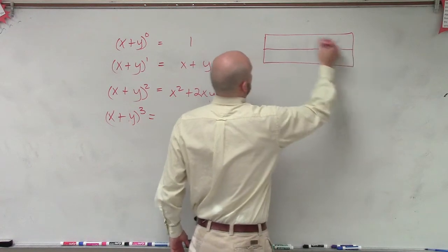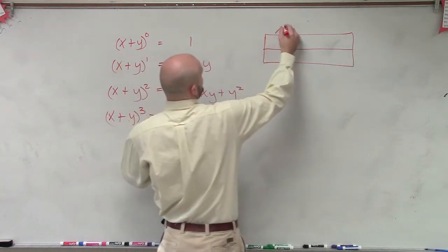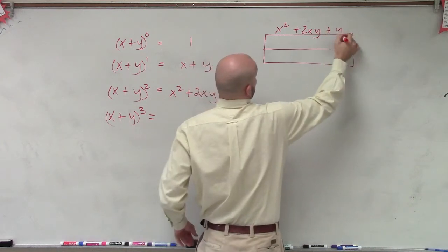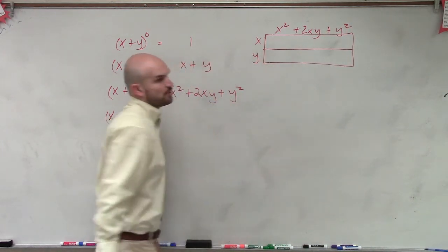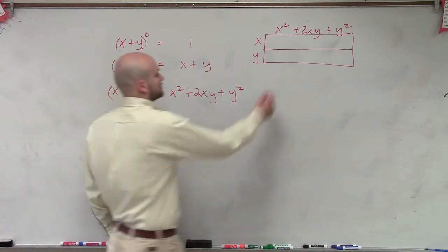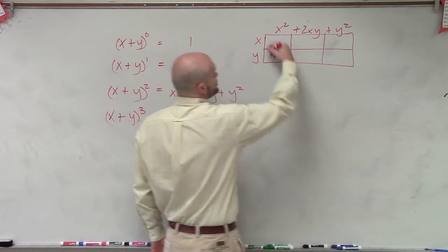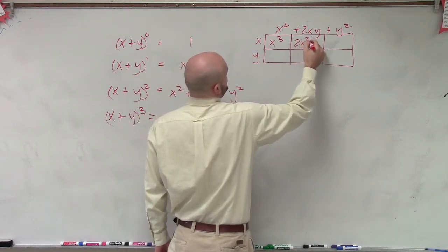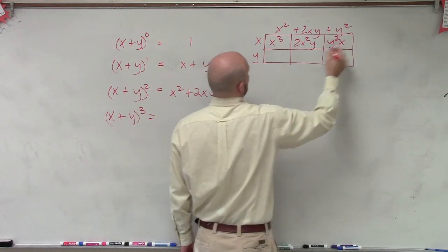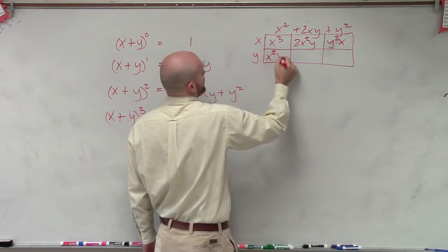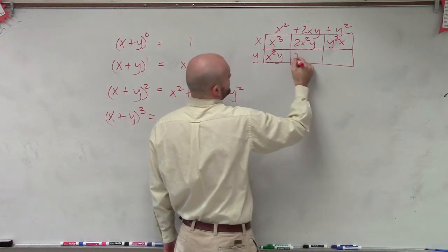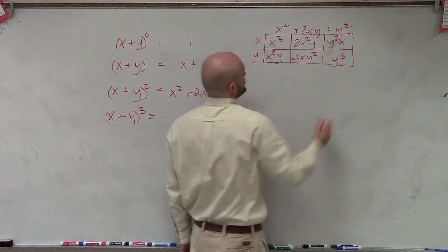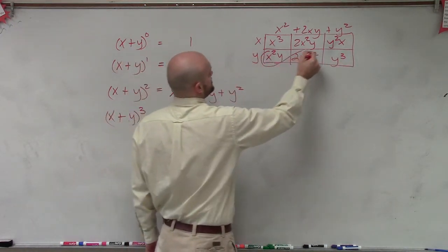So what I'll do is I'll write out x plus y squared, which is x squared plus 2xy plus y squared, and I'll multiply it by another x plus y. So therefore, x times x squared is x cubed. This is 2x squared y. This is y squared x. This is x squared y. This one is going to be 2xy squared. And this one is y cubed. And then we notice we do have some common terms here.